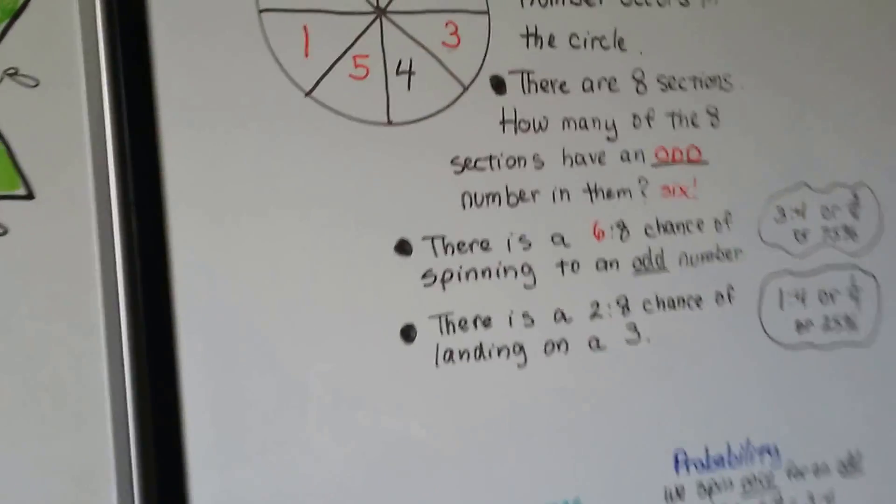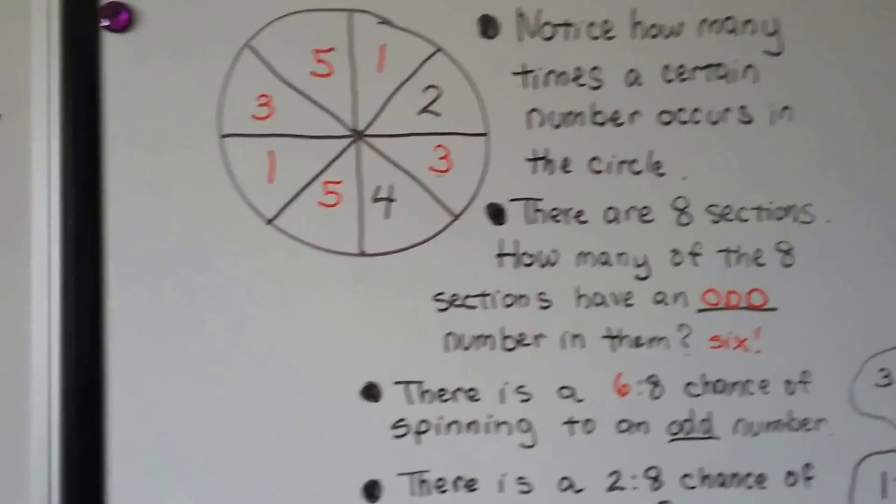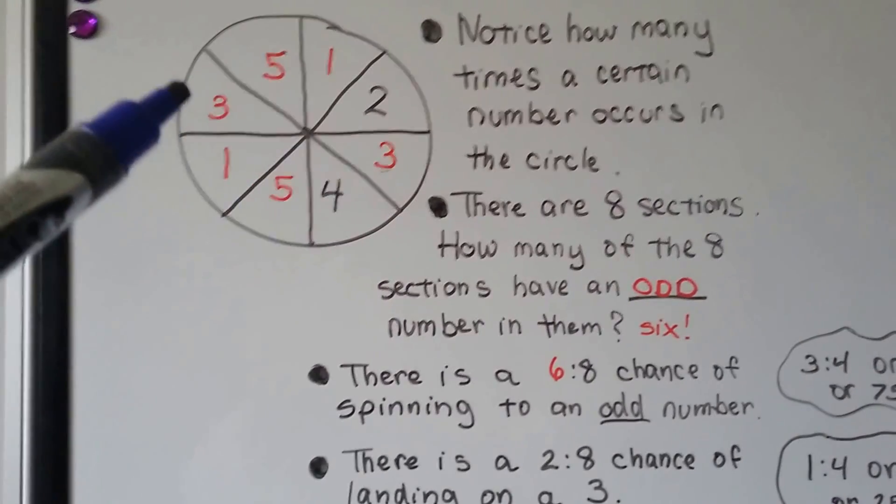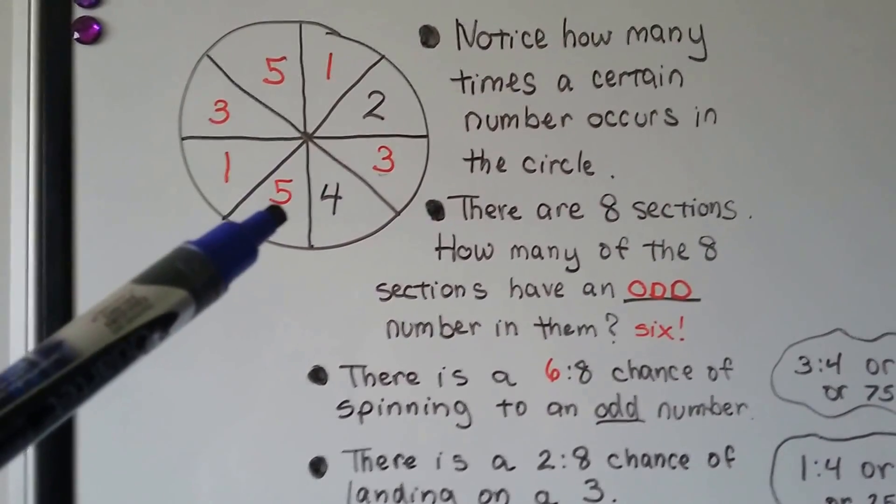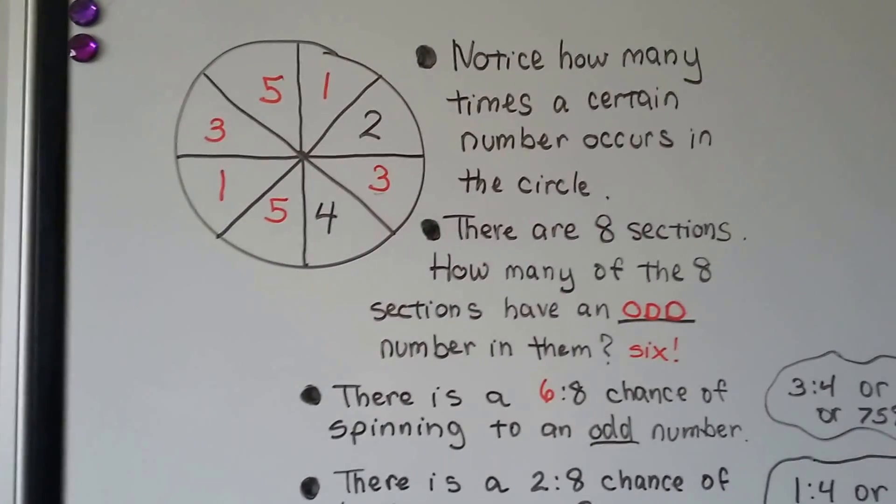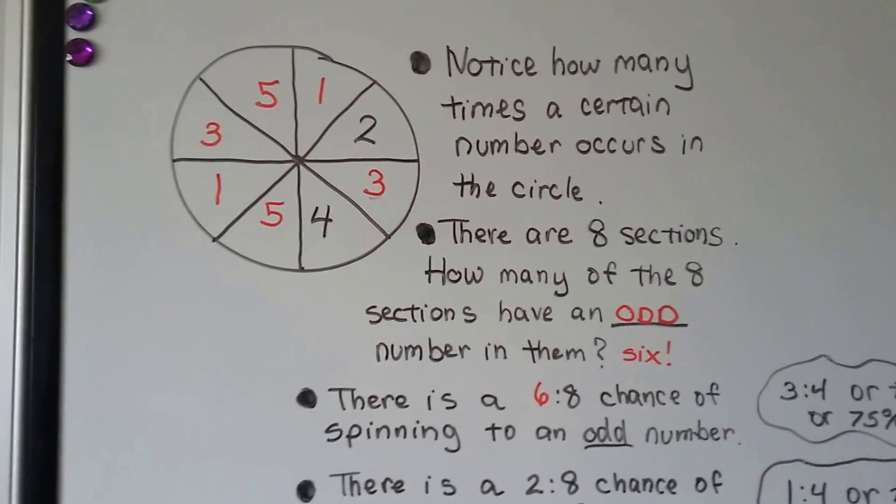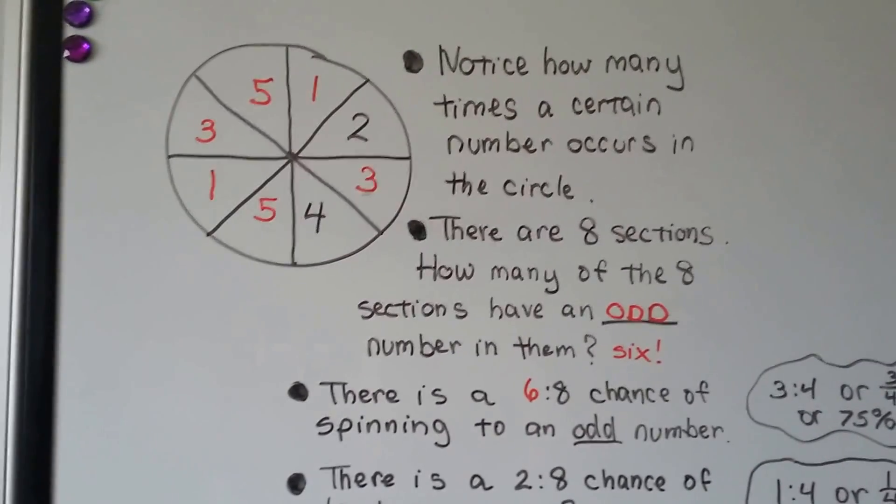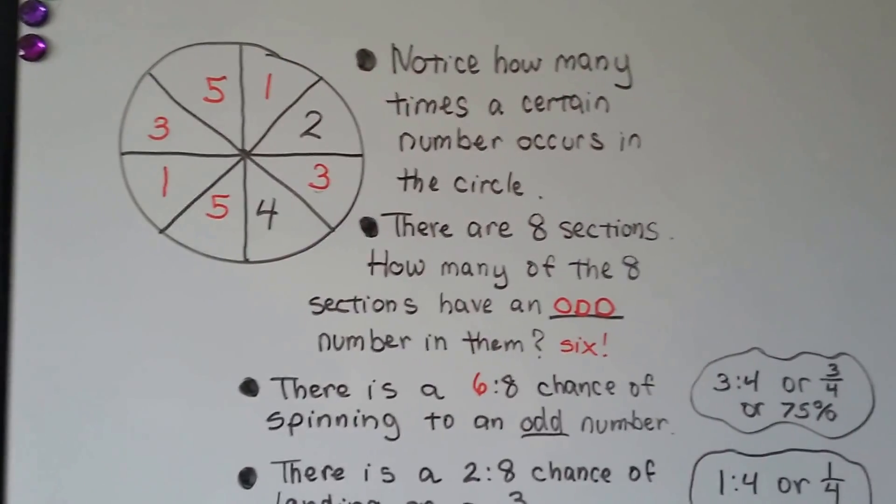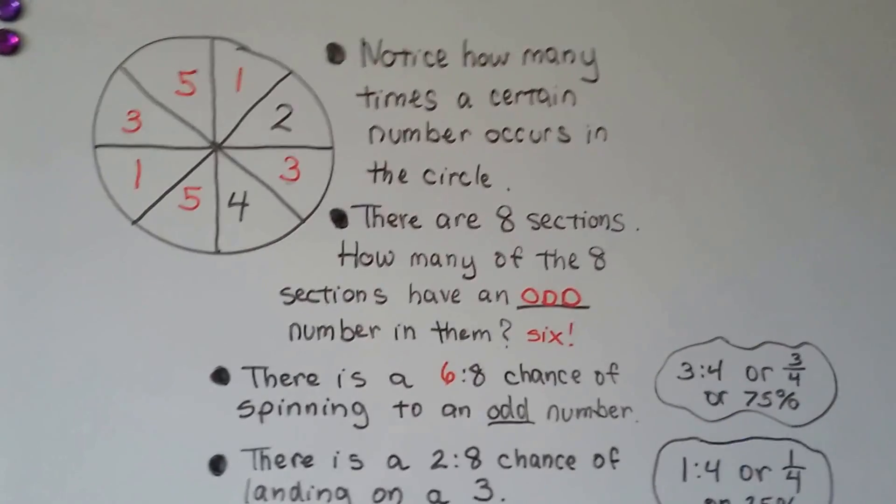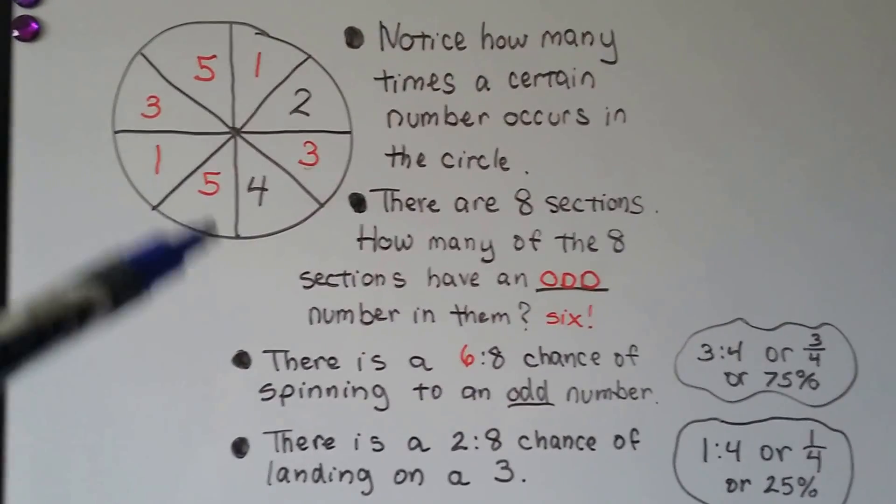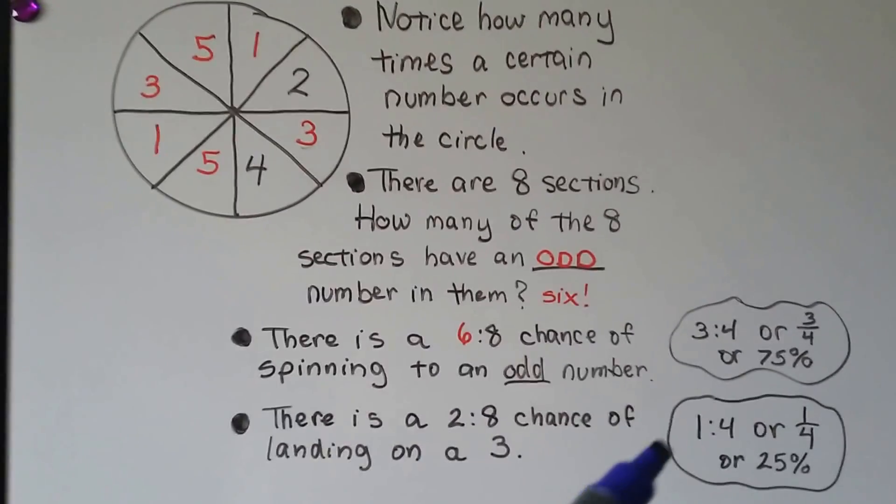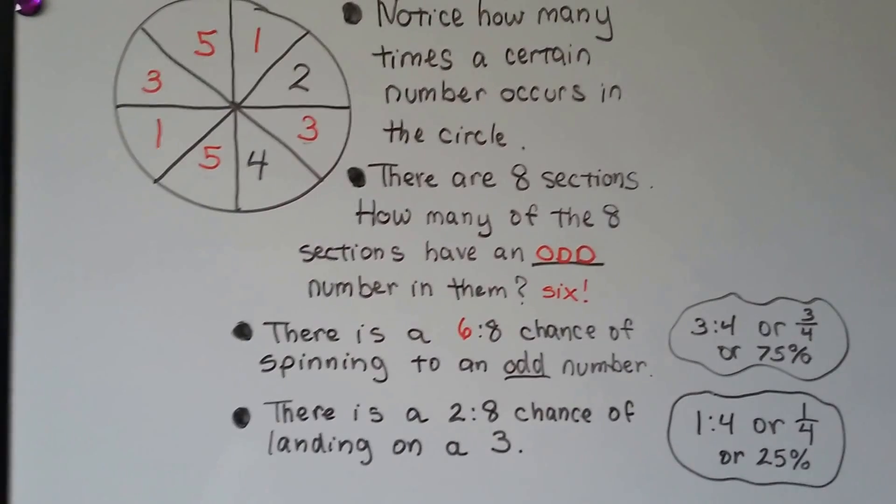Now take a look at this circle. Notice how many times a certain number occurs in the circle. We've got a one, and then we've got a one again. We've got only one two. We've got a three and a three. We have one four, but we have five two times. And there's eight sections. How many of the eight sections have an odd number in them? Six. There's six chances of landing on an odd number out of eight sections. So there's a six to eight chance of spinning to an odd number. We can reduce it to three to four or three fourths or 75%. The chance of landing on a three, two of them have a three in them. So we have a two to eight chance or a one to four, one fourth or 25% chance of landing on a three.